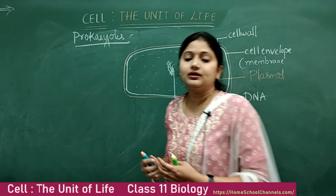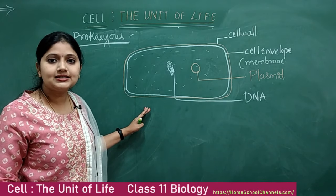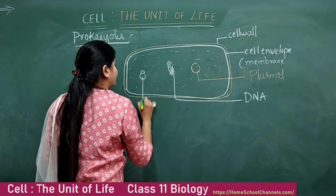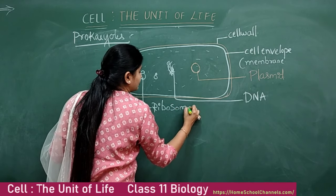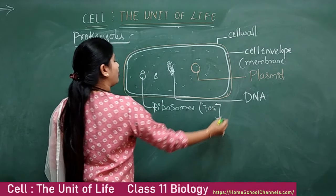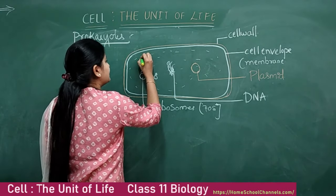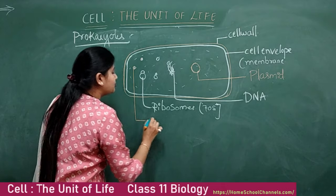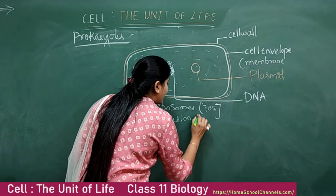Membrane-bound organelles are absent in prokaryotes; they are present only in eukaryotes. However, ribosomes are present in prokaryotes — these are 70S type ribosomes. Apart from this, there are also some inclusion bodies present here and there in the prokaryotic cell.